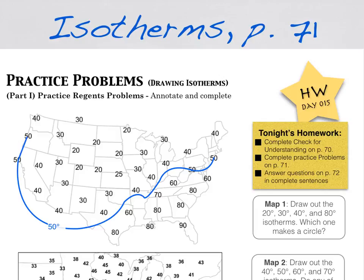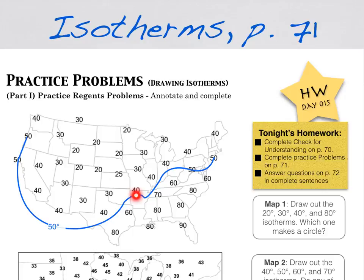We're going to look at page 71 of day 15 homework, which will help you review isotherms. As a quick review, an isotherm is a line that connects points of equal temperature. For example, here is the 50-degree isotherm — it connects all of the 50s, and some interpolated 50s. For instance, there is a 50 between 40 and 80, and between 30 and 60, and between 40 and 60 we can interpolate a 50 as well.